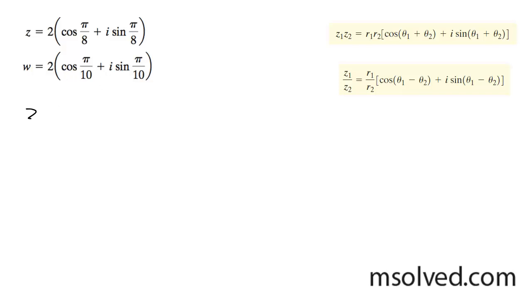Starting off with the product, we get 2 times 2 times the cosine of pi over 8, which converts into 5 pi over 40. We need a common denominator.